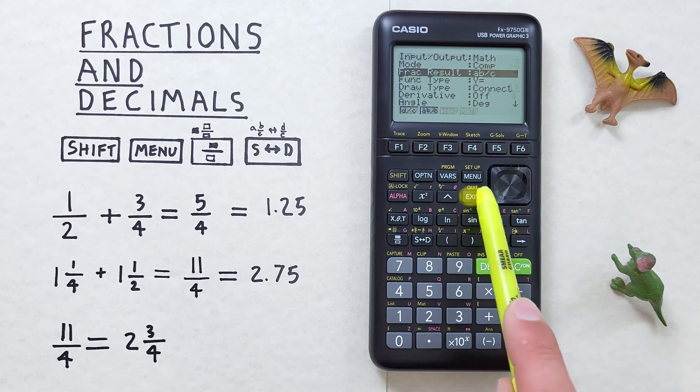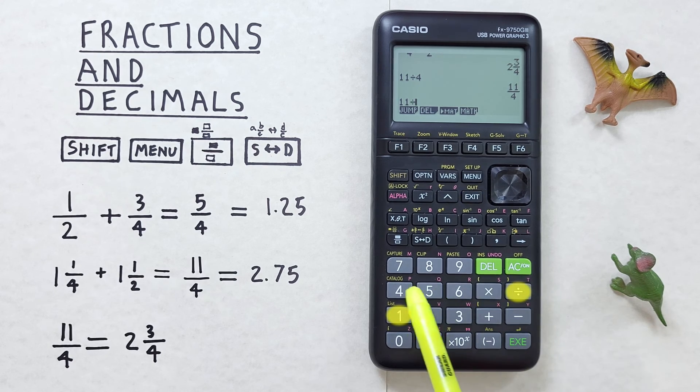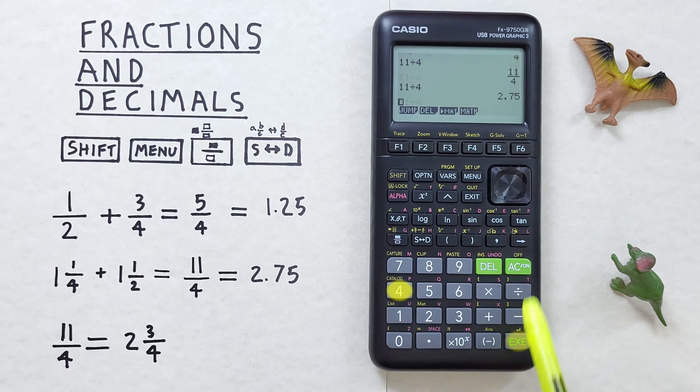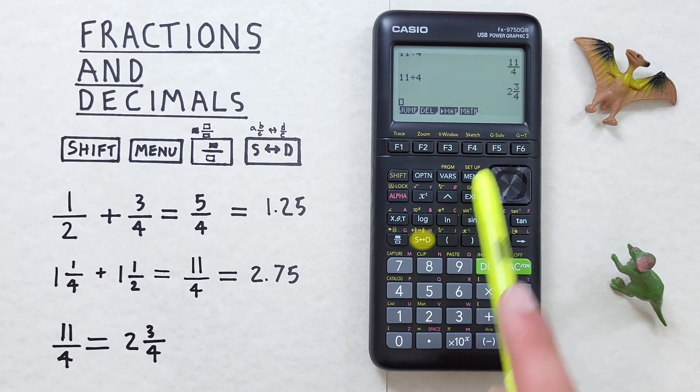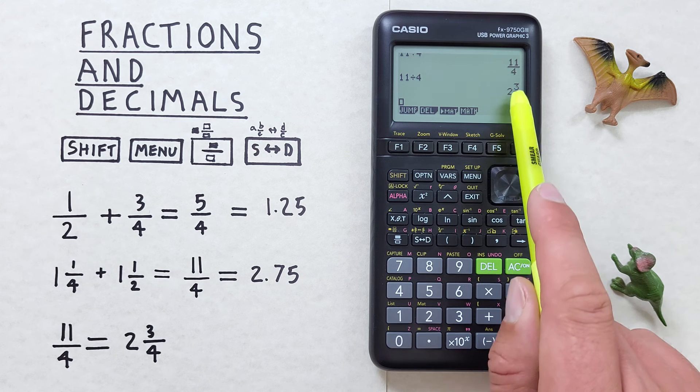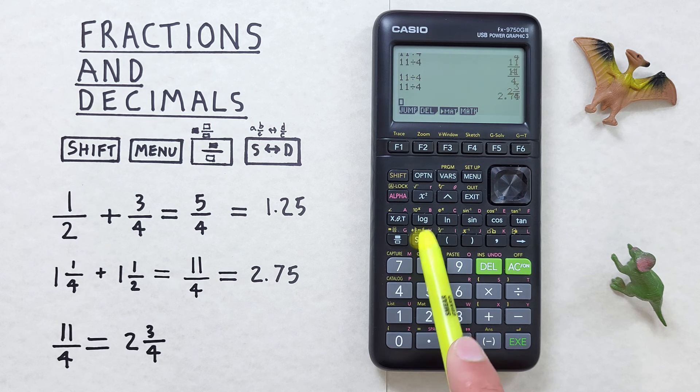Now if we exit out of this and do 11 divided by 4, first we get our decimal and if we convert that we get the mixed number of 2 and 3 quarters, which again can be converted back and forth to the decimal format.